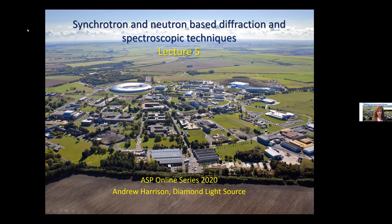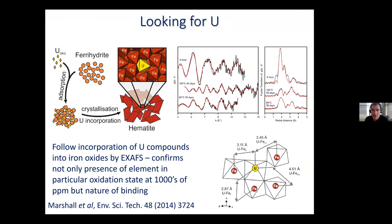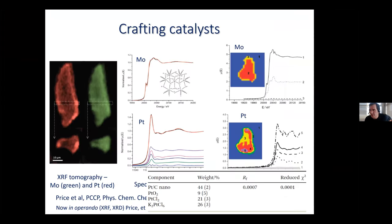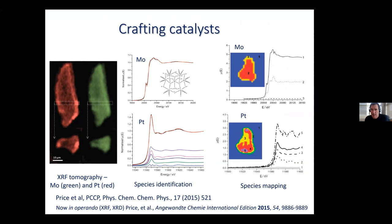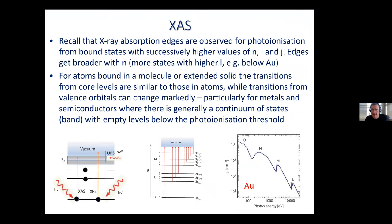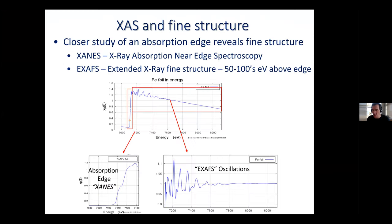Welcome back. This is the fifth of six lectures. Recapping the last lecture, we started talking about spectroscopy, beginning with x-ray absorption spectroscopy. There are two techniques that are particularly powerful with synchrotrons because with the brightness you can start to look with very high resolution at the edge of a transition.